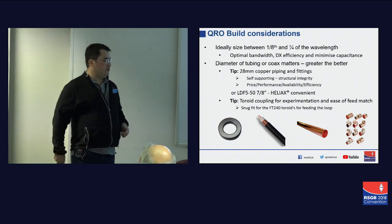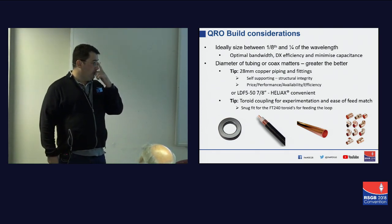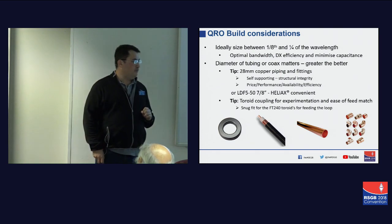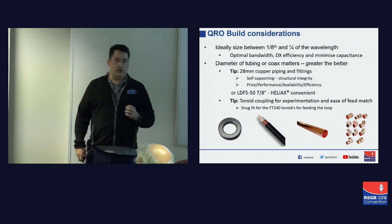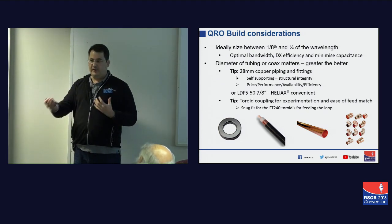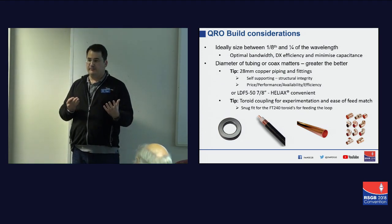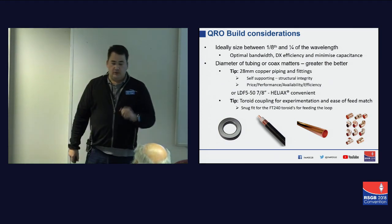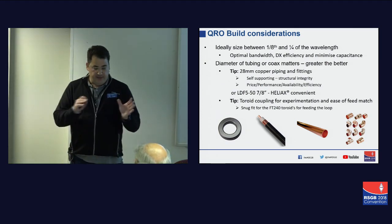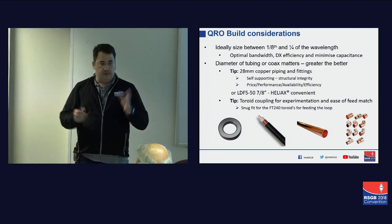There is a performance implication if you use thin coax versus 28mm copper — the greater the diameter of the material, the greater performance you're going to experience. If you were to build a loop out of 54mm copper, that would work very well, but those fittings and that copper are going to cost a fortune. So 28mm tends to be the best bang for buck in terms of performance. Everything's a compromise.